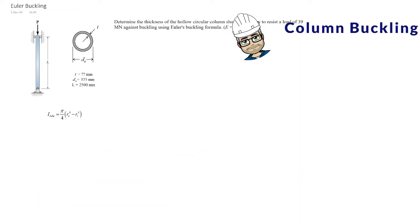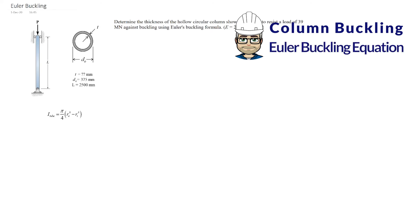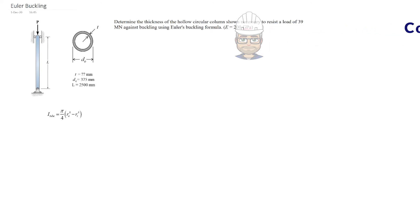So we have a column which is pin connected at both ends. Determine the thickness of the hollow circular column shown. We have a cross-section with an unknown thickness T and an outer diameter of 375 millimeters to resist the load of 39 meganewtons against buckling using Euler's buckling formula. I provide the formula for the moment of inertia for the tube and we're going to use steel, so Young's modulus of 200 GPa.